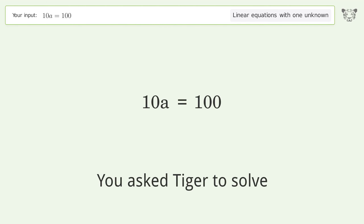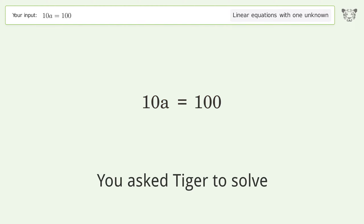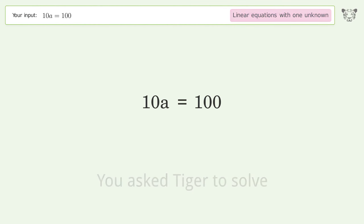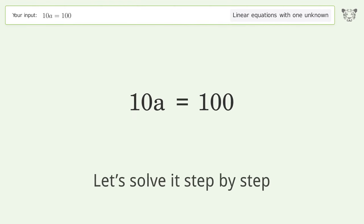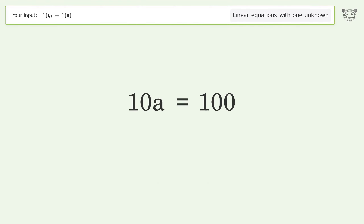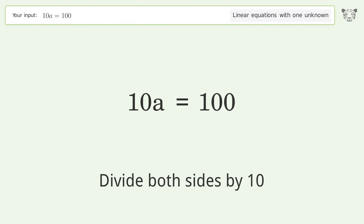Tiger is asked to solve a linear equation with one unknown. Let's solve it step by step: isolate the variable a by dividing both sides by 10.